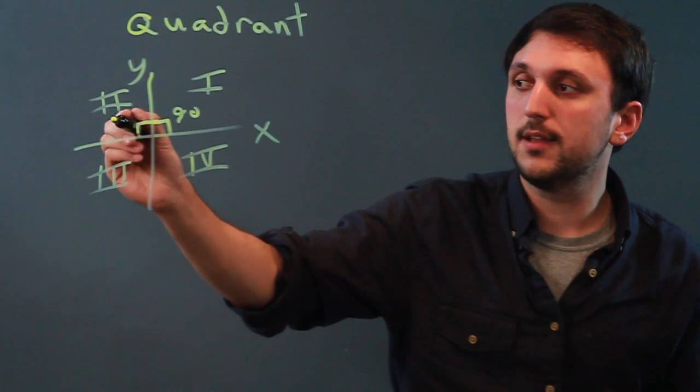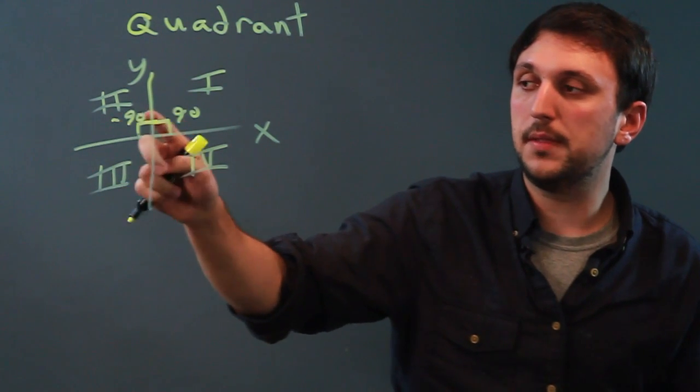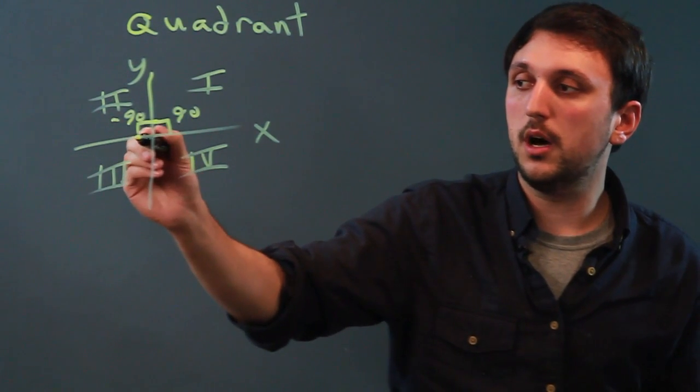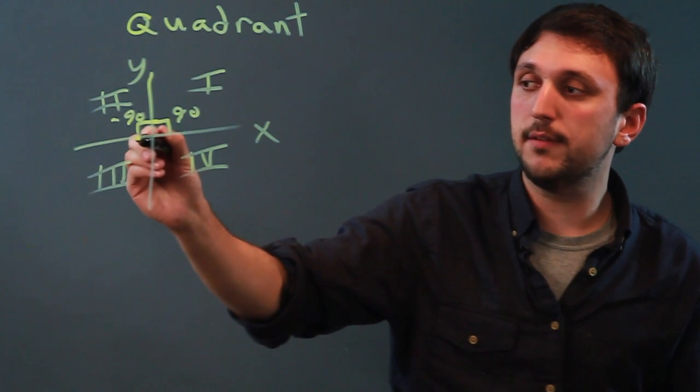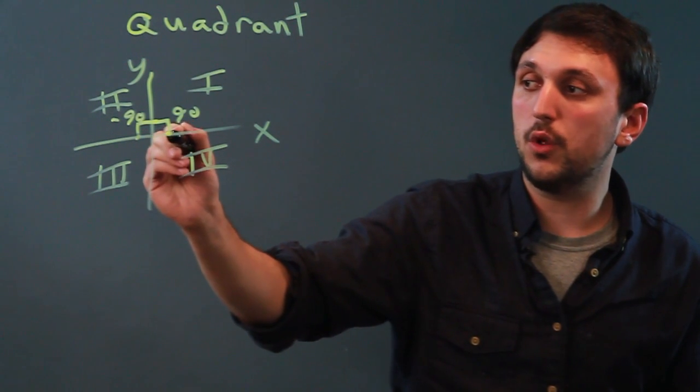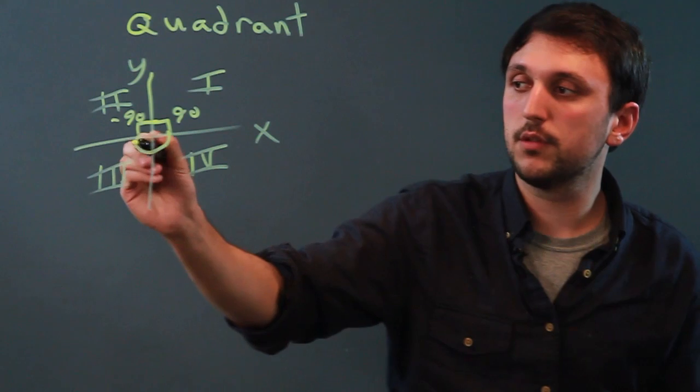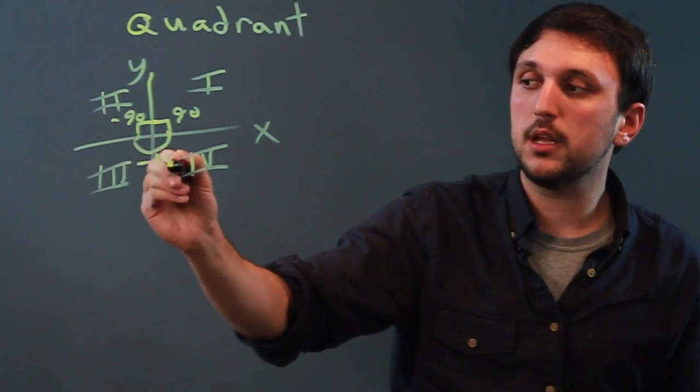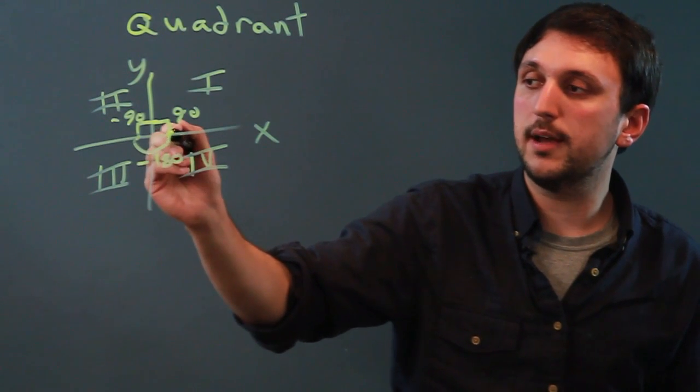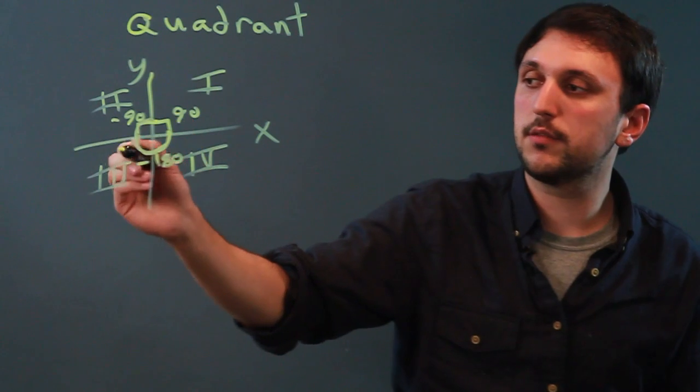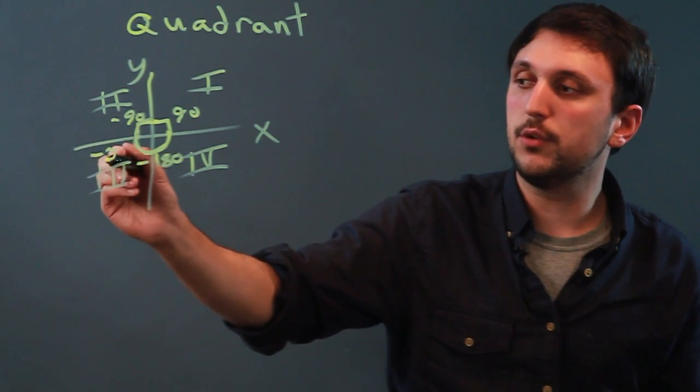If we had this, that's negative 90 degrees and that's still quadrantal. We could have an angle that goes all the way around like this, and that is negative 180. Or we could have an angle going all the way like this, which is negative 270.